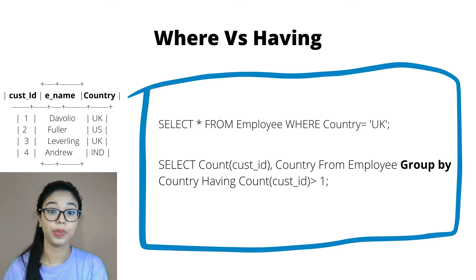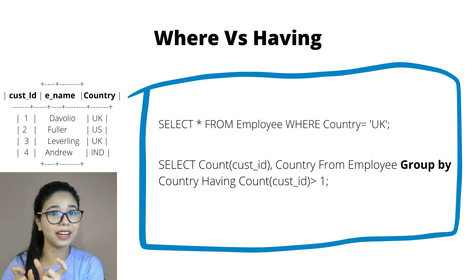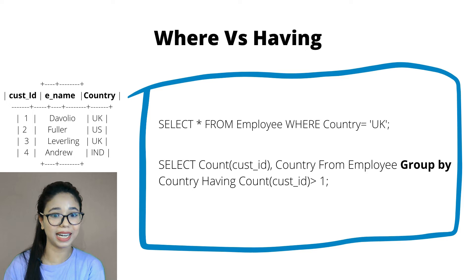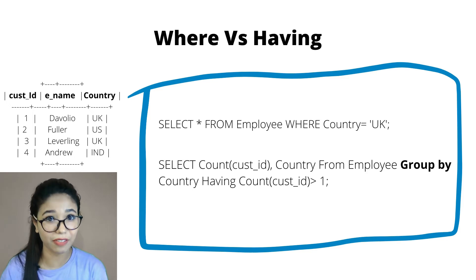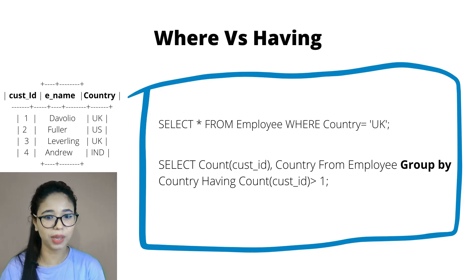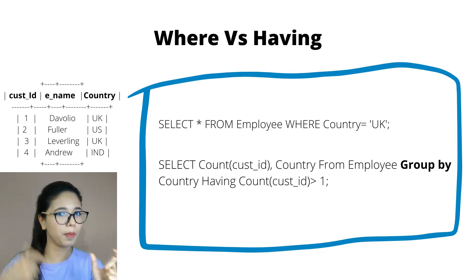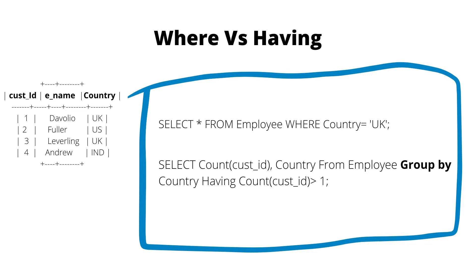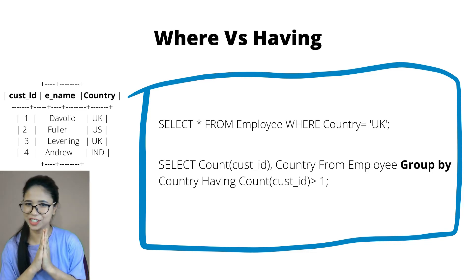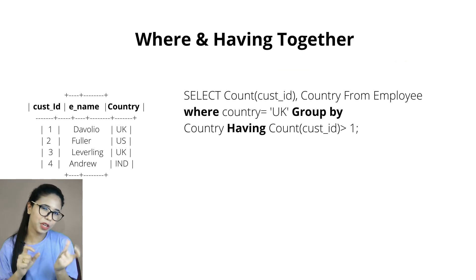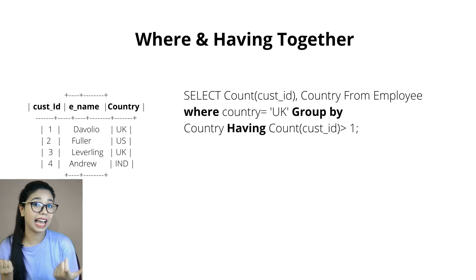Then: HAVING COUNT(customer_id) > 1. Since COUNT is an aggregated function, I used the HAVING clause here, not WHERE. This gives the number of customer IDs for each particular country where the count is greater than one.